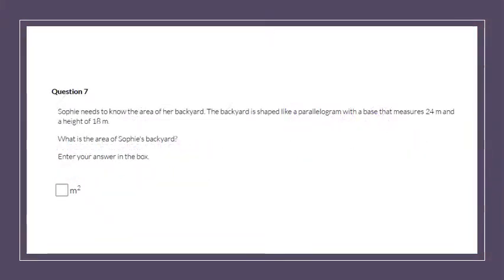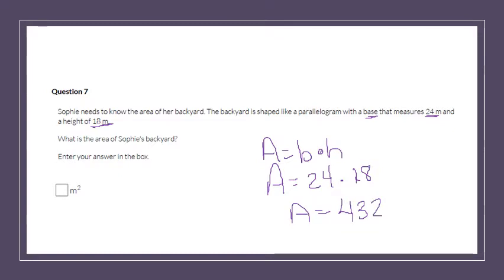Number 7. Sophie needs to know the area of her backyard. The backyard is shaped like a parallelogram with a base that measures 24. So I'm going to go ahead and rewrite our formula. They told us our base is 24 and our height is 18. What is the area? So all I have to do is multiply those together. And I get that the area is 432. And this is meters squared.